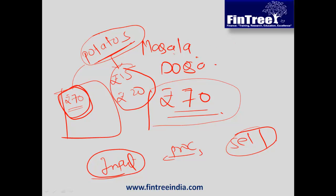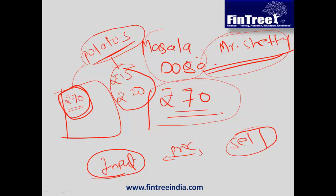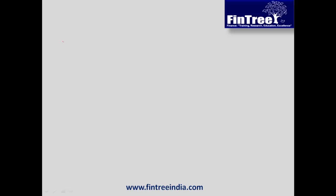Now let us say the owner of this restaurant is Mr. Shetty. Mr. Shetty is worried and thinks about how he can overcome the uncertainty attached to the prices of potatoes. So now what he does is get hold of a farmer — let us say he knows some farmer in rural areas outside the city.